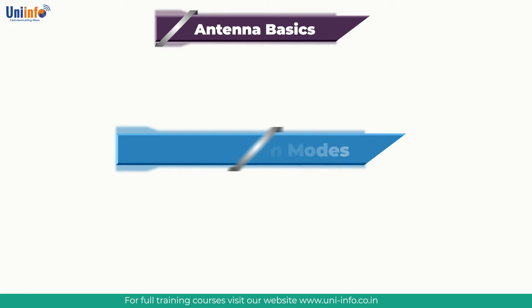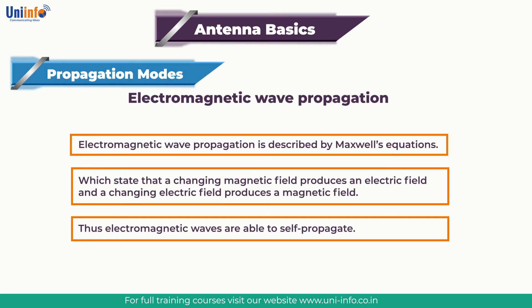Our next topic is Modes of Propagation. Electromagnetic wave propagation is described by Maxwell's equations, which state that a changing magnetic field produces an electric field and a changing electric field produces a magnetic field. Thus, electromagnetic waves are able to self-propagate. For most RF propagation modelling, it is sufficient to visualise the electromagnetic wave as a ray in the direction of propagation.